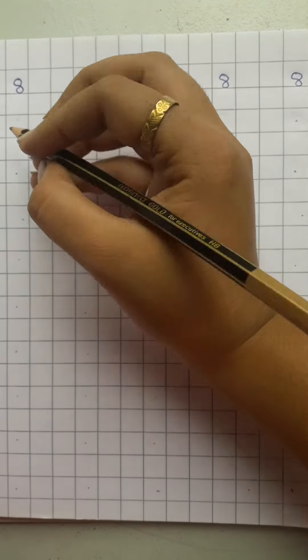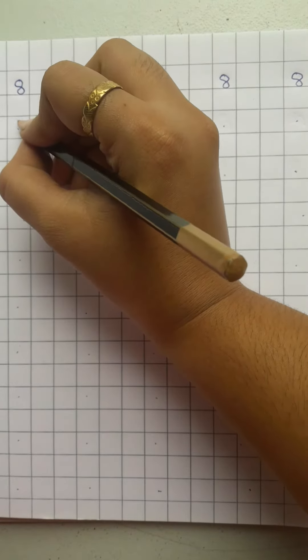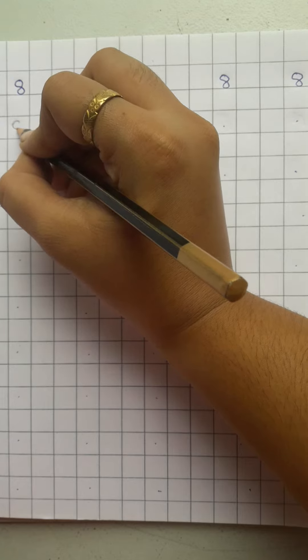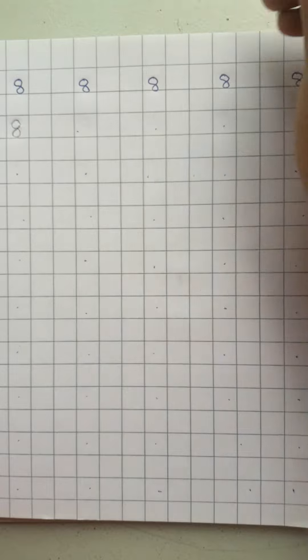Starting from here, for 8, you have to make two curves. Yaadana sabko? Yes, very good. Like this. A curve. Another curve. Making a circle. Like this. This is your 8.